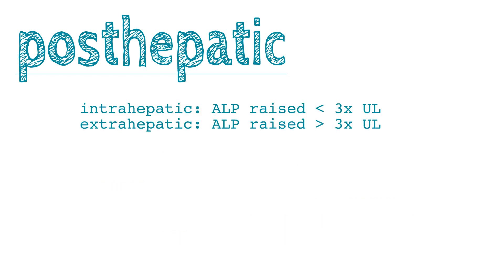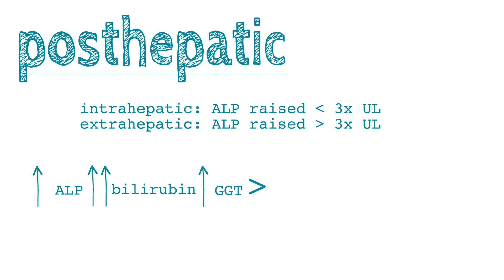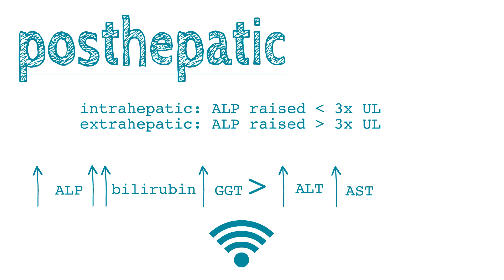With an intra-hepatic obstruction, the increase in ALP is less than three times the upper limit. With an extra-hepatic obstruction, the ALP increase is more than three times the upper limit. The rises in ALP, bilirubin, and GGT are higher than the rises seen with ALT or AST. Once confirming the raised ALP originates from the liver, an abdominal ultrasound will help to determine whether there is an intra- or extra-hepatic cause of obstruction.